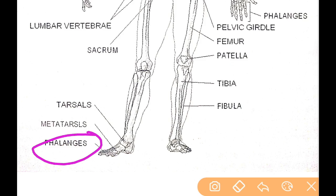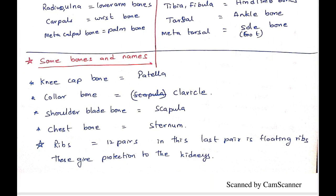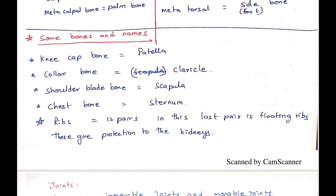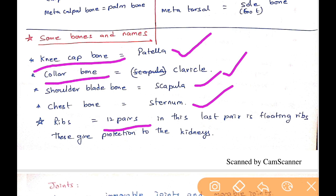Some important bone names: the kneecap bone is called the patella — it is not present in the forelimbs. The collar bone is called the clavicle, the shoulder blade bone is called the scapula, and the chest bone is called the sternum in the thoracic cavity. There are 12 pairs of ribs which safeguard the lungs; the last pair also protects the kidneys.